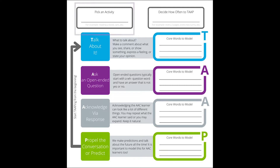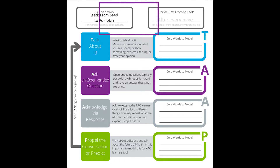The first step to tap your way through is to pick an activity. We've already done that — we're reading the book From Seed to Pumpkin. Next, you decide how often you will stop and tap. For this story, we suggest tapping after every page of the book.